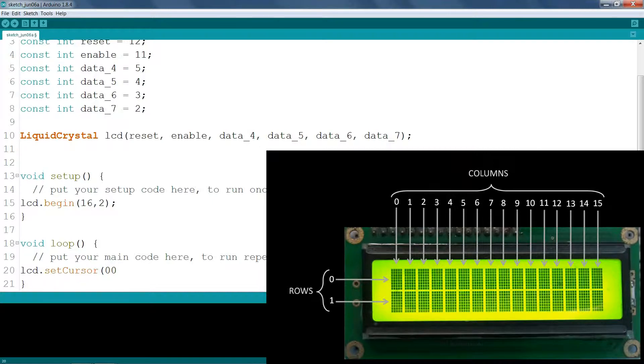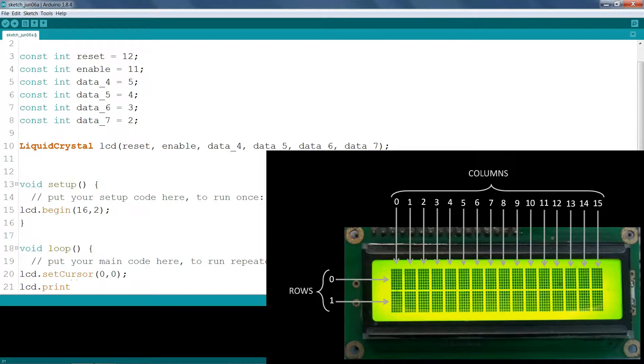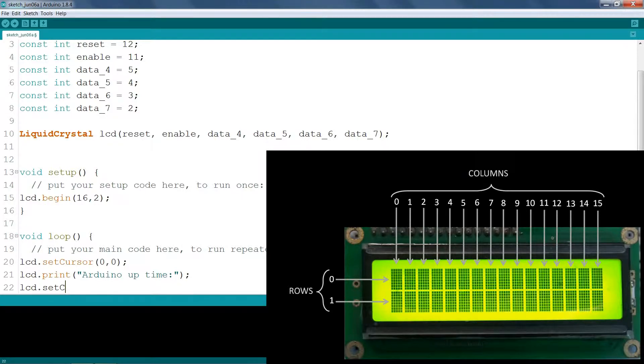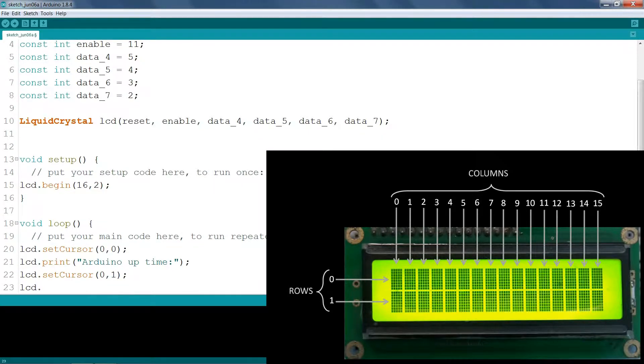Now in the loop section set the cursor to column 0, row 0. Now let's display some text like Arduino uptime. Now set the cursor to column 0, row 1. Now let's display the number of seconds since reset.